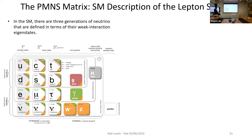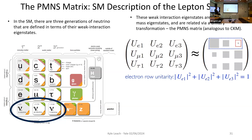Now the PMNS discussion will be much shorter. We have this same three-by-three paradigm in the standard model for neutrinos, and now we want to do the same unitarity test but for neutrinos. We can think about doing it for the top row, which is natural because the top row describes how neutrinos couple to the electron flavor—and the electron flavor is what we emit in nuclear beta decay.